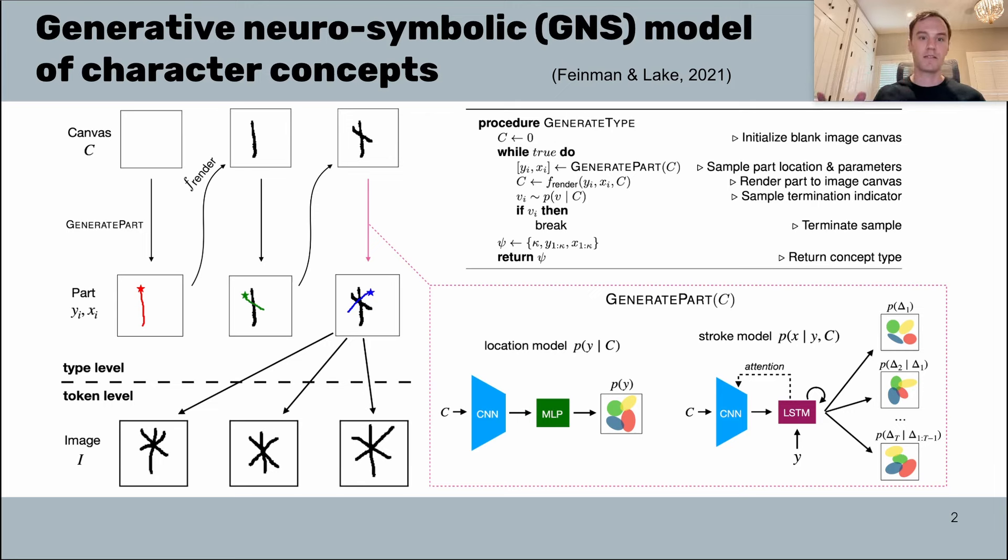The second part is the stroke model or the trajectory model. This also has a convolutional neural network component that reads the image canvas and then has a recurrent neural network or LSTM component which is sequentially generating the trajectory of the stroke one piece at a time while attending to the image canvas.